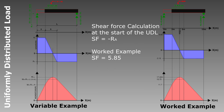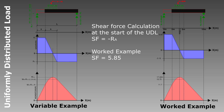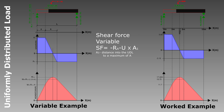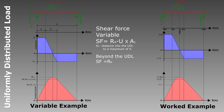Taking a section cut at the start of the UDL, the only load to the left is the reaction RA, giving us a straight horizontal line up to that point. Once we move into the UDL, forces start imparting upon the section, so the shear force reduces at a gradient equal to the magnitude of the UDL — in our case, 3 kN/m. This gradient remains constant until the other end of the UDL, after which we return to a straight line. As a sanity check, the value at RB equals the reaction force RB, satisfying the condition that all net vertical forces sum to zero.